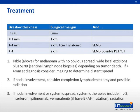Metastatic melanoma generally has a poor prognosis, while early stage melanoma has 90 to 95% 5 and 10-year survival rates. Therefore, patients with metastatic melanoma or stage 4 disease generally have a poor prognosis, while those with early stage disease, such as stage 1 or stage 2, have a very good prognosis.